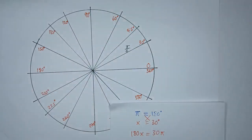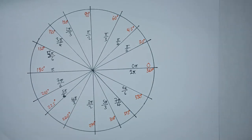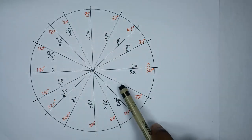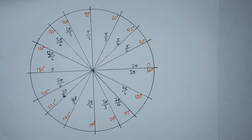We do the same for all the angles to find every angle in radians. Now we have every angle in terms of degrees as well as in terms of radians. All these angles can easily be converted by simply using the conversion factor that pi is equivalent to 180.